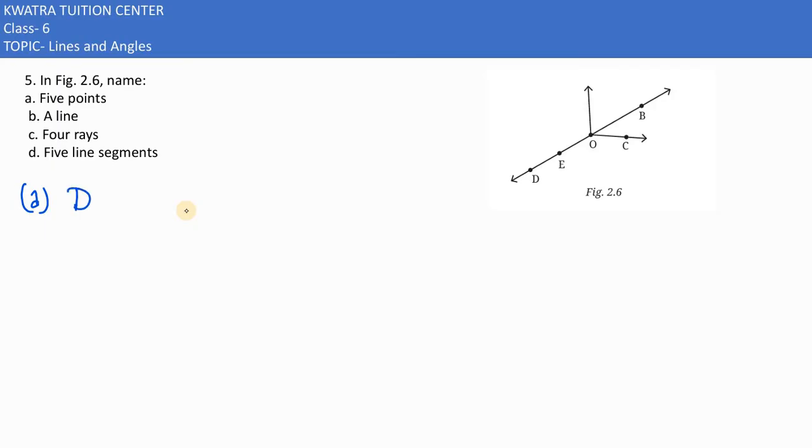I can clearly see one of the points is D, second point is E, third point is O, fourth point is C, and then the last one is B.